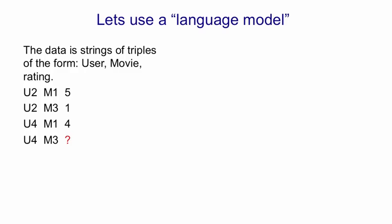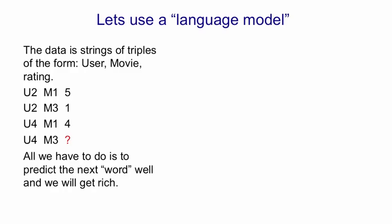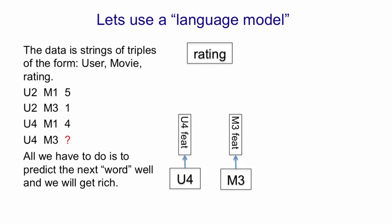Here's some of the data from that table, and we just have to predict the third term of a triple. If we built a language model, what we would do is convert each user into a learned vector of features for that user, and convert each movie into a learned vector of features for that movie. From those two feature vectors, we'd try to predict the rating. The obvious way is to put in a big hidden layer and make the feature vectors feed into it, then have the hidden layer predict the rating. We tried that, but couldn't get it to work any better than a very simple method.